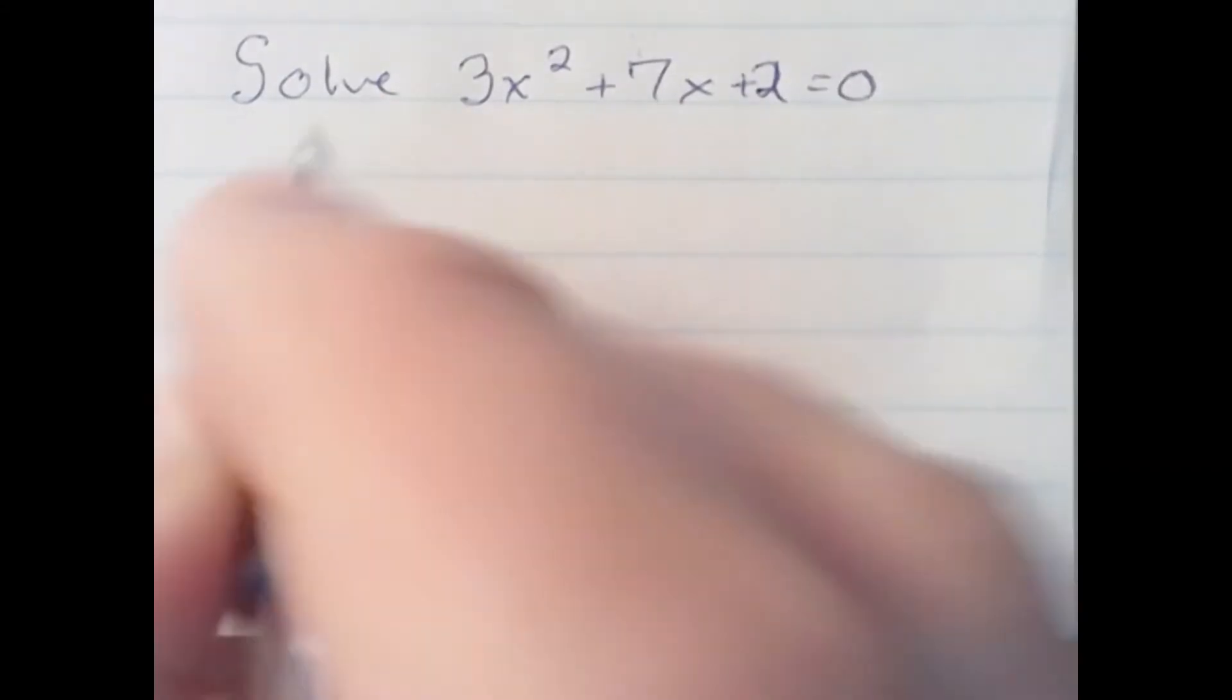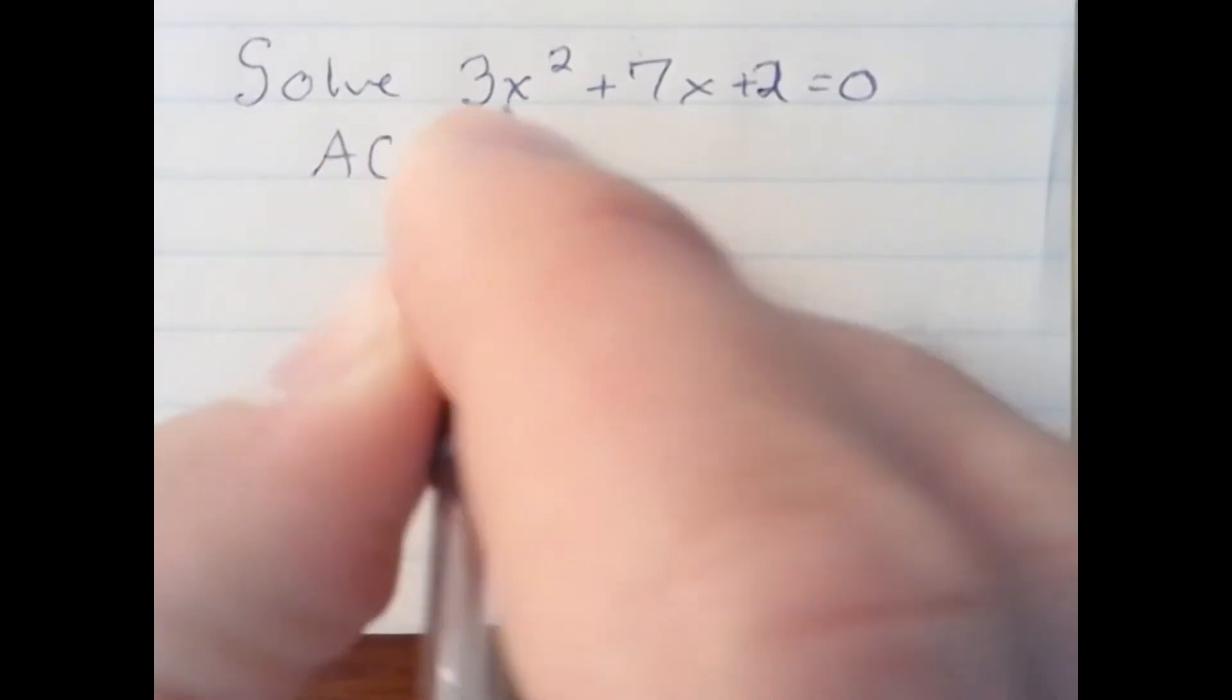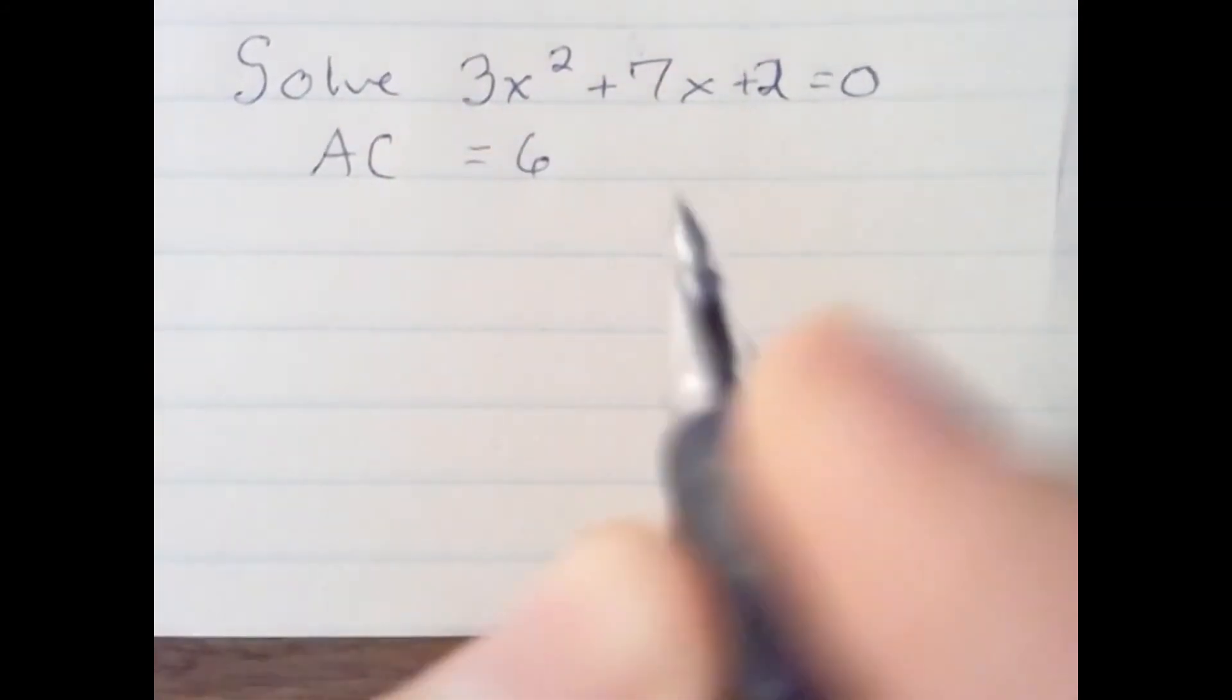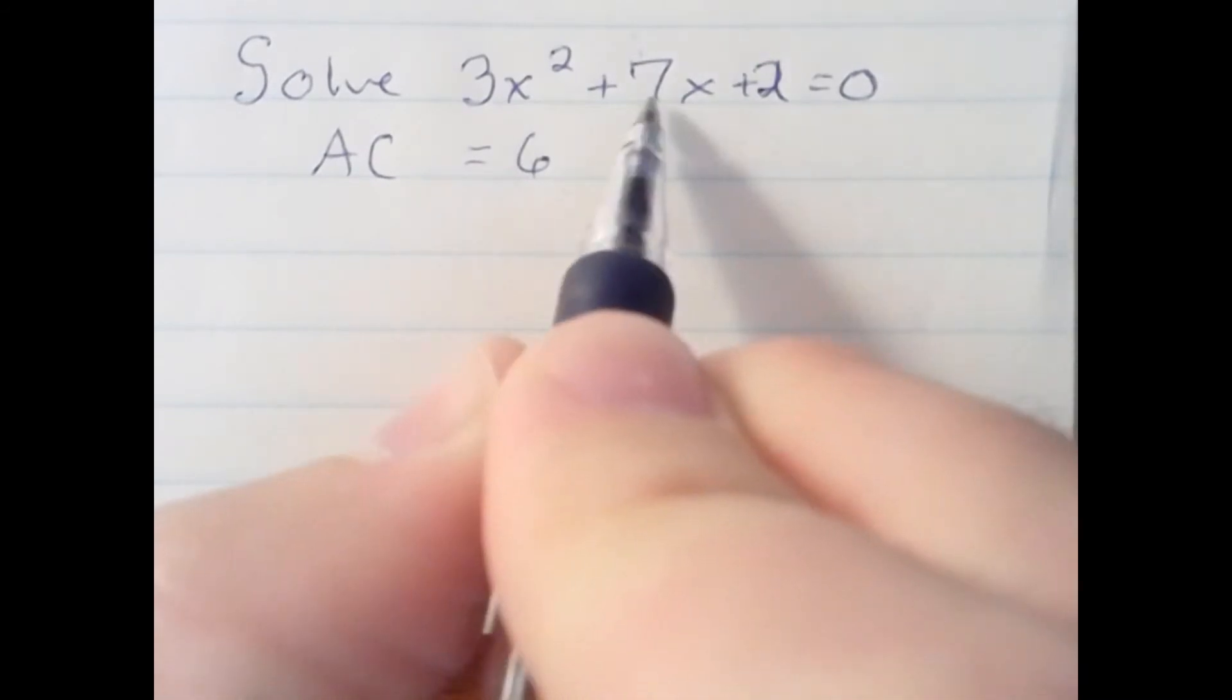We'll use the AC method of factoring. We take the A number times the C number to get 6, and we ask ourselves what factors of 6 add up to 7.